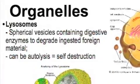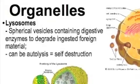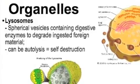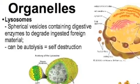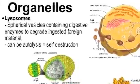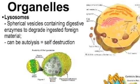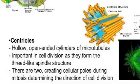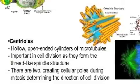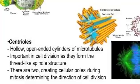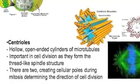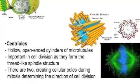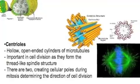Lysosomes are next. These are spherical vesicles containing digestive enzymes to degrade ingested foreign material. These vesicles can cause autolysis, which is self-destruction. Cells sometimes have to self-destruct. Centrioles are hollow, open-ended cylinders of microtubules. They are important in cell division as they form the famous thread-like spindle structure, separating DNA when we make two cells out of one. There are two of them, creating cellular poles during mitosis, determining the direction of cell division.